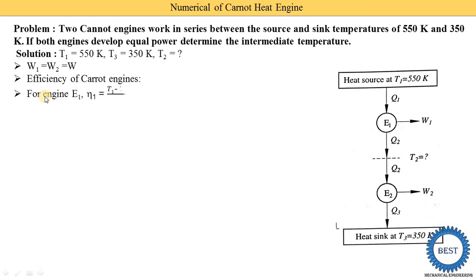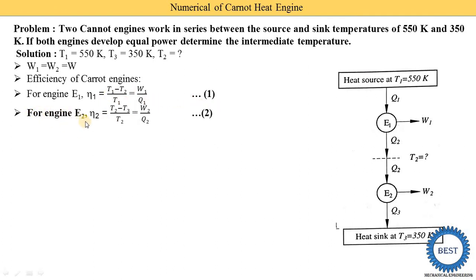We write down the efficiency equations for the Carnot engines. For engine E1, efficiency one equals T1 minus T2 upon T1, which equals work output W1 upon heat input Q1 — this is equation number one. For engine E2, efficiency two equals T2 minus T3 upon T2, which equals W2 upon Q2 — this is equation number two.